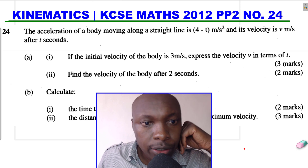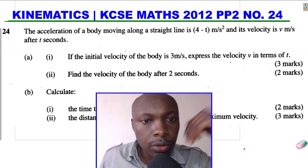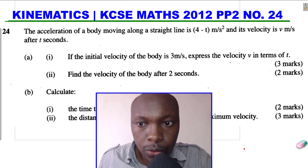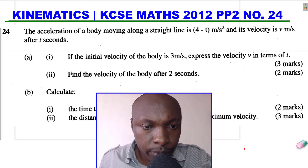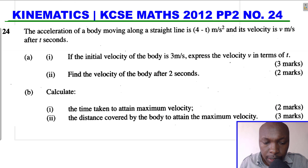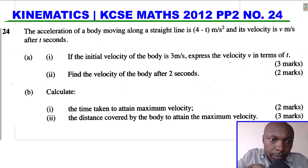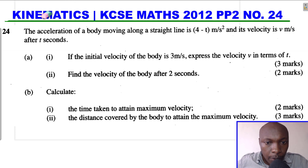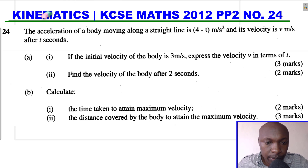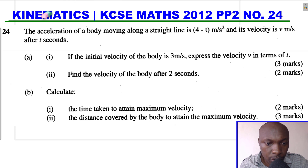Hello viewers, welcome to the lesson. We're solving a kinematics question from KCSE Mathematics Paper 2, 2012, Question 12. The acceleration of a body moving along a straight line is (4 minus t) meters per second squared, and its velocity is v meters per second after t seconds. Part a1: given the initial velocity is 3 m/s, express v in terms of t. Part a2: find the velocity after 2 seconds. Part b: find the time to attain maximum velocity and the distance covered to attain it.